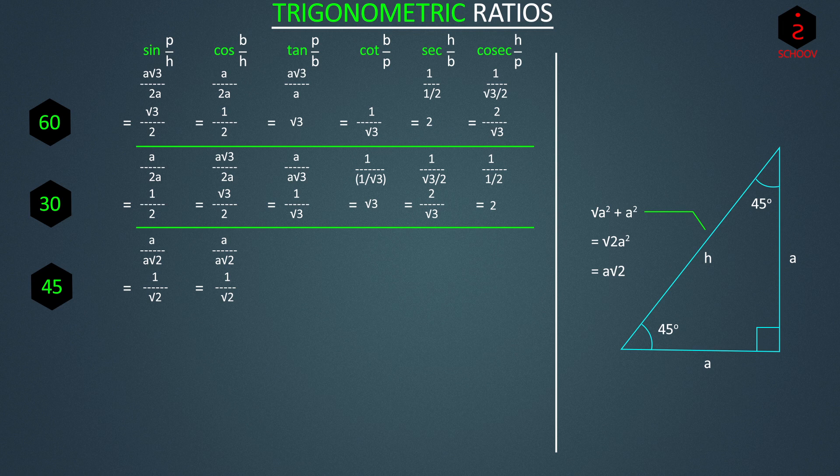And tan 45 is perpendicular by base, A by A, 1. Rest are just reciprocals. So cot is 1, sec is root 2, and cosec is also root 2.